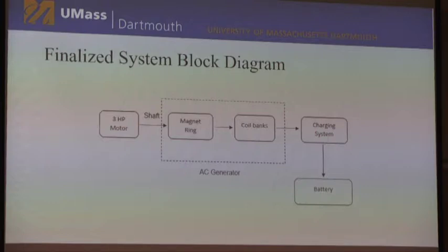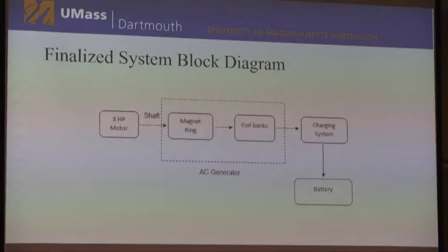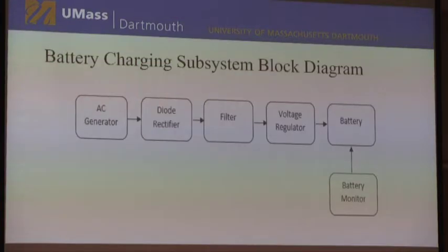Here's an overview of our block diagram. The generator uses a 3-horsepower motor. A variable frequency drive spins the motor. The motor is connected to a shaft that's bolted to the ceiling at CIE. That shaft spins the inner ring, and when the magnets zip by the stationary coils, that produces our AC voltage. That AC voltage then goes into a charging subsystem, which charges our battery.